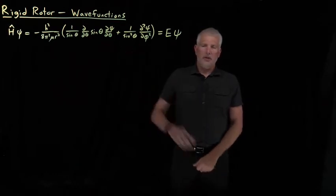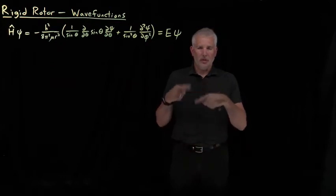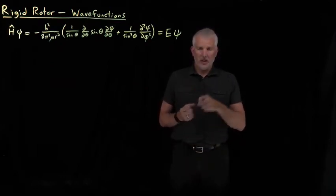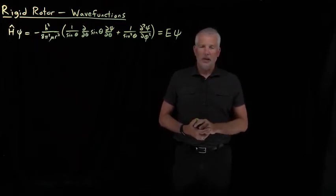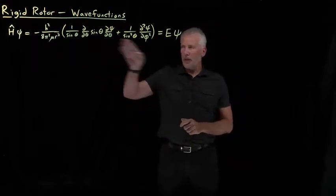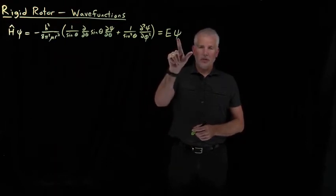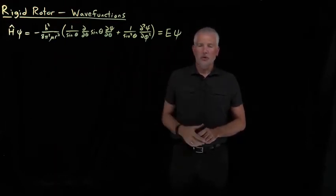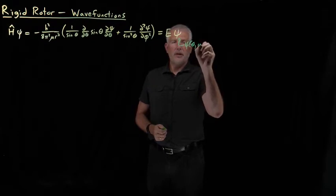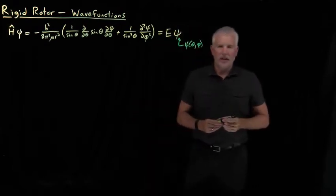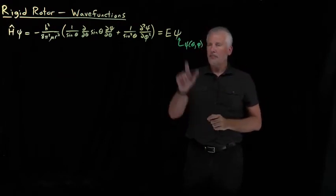Here is the Schrödinger equation for the rigid rotor model, a model for diatomic molecules that allows the molecule to rotate with no potential energy. It's rigid, so it does not allow the molecule to vibrate, and its center of mass is fixed at a point in space. With that model, we've been able to write down Schrödinger's equation, and our next task is to figure out what wave functions ψ of theta and phi solve this differential equation.